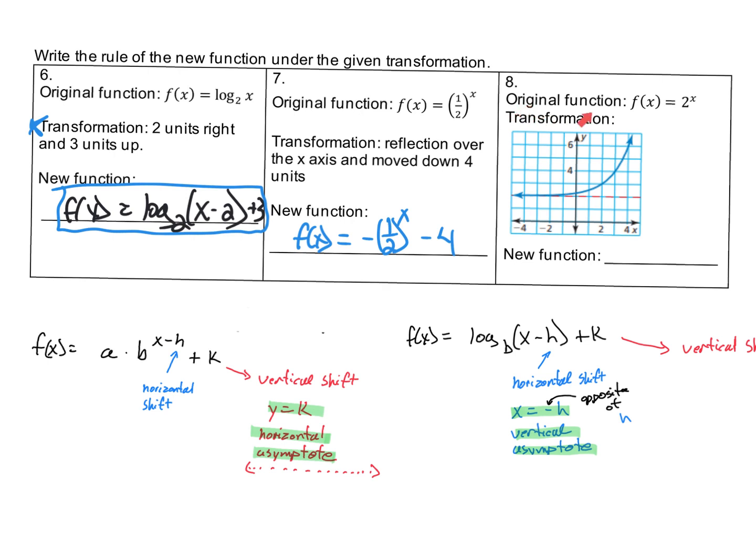Problem 8: the original function is f(x) = 2^x. Again, we have another exponential function. You can see it graphed here. The horizontal asymptote is at y = 2.